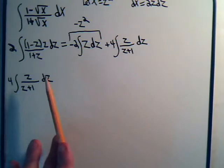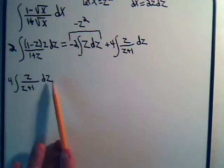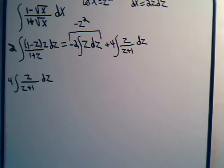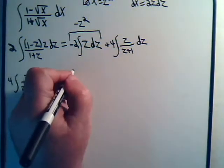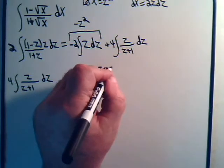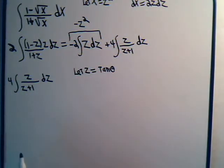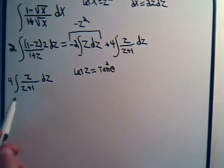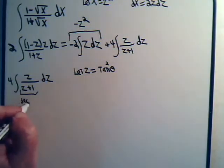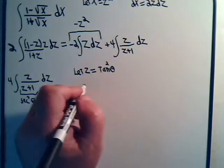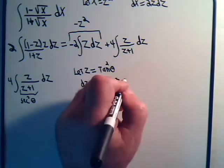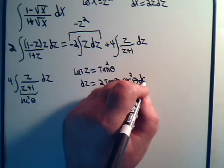If z equals tangent squared theta, then z plus 1 would be the secant squared of theta. And if z is tangent squared, then dz would be 2 times the tangent of theta times the secant squared of theta dθ. We could cancel terms, so maybe that would work. Let's try it: let z equal tangent squared theta, so z plus 1 is secant squared theta, and dz is 2 tangent theta times secant squared theta dθ.